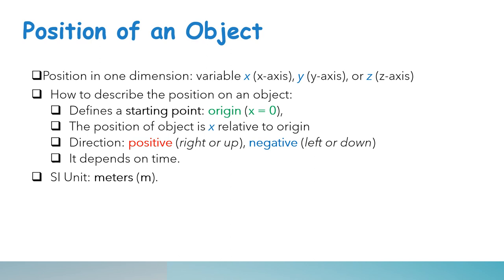Now we draw the x-axis and y-axis. This is the x-axis. This is x and this is y. This is the origin. The right or up is positive, meaning this is positive x and this is positive y. While this one is negative y and this one is negative x. The SI unit is in meters.